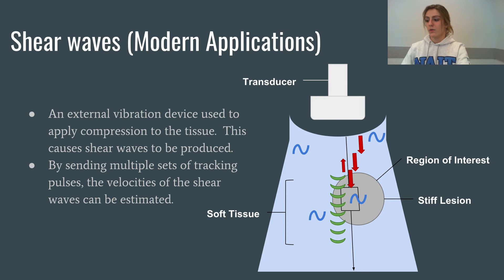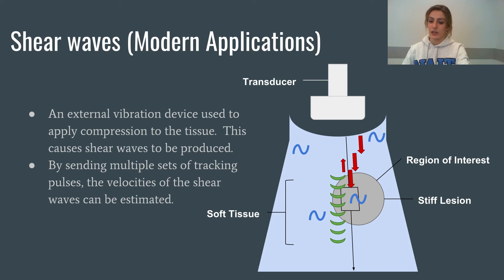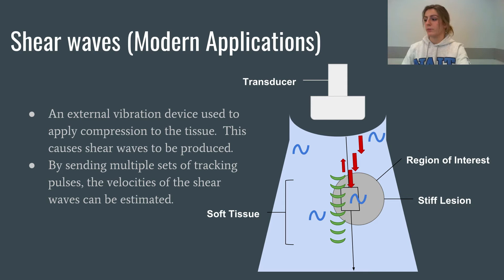When we use shear elastography today, we use an external vibration device and shear waves to apply compression to the tissue, which causes shear waves to be produced. Shear waves travel perpendicular to the compressional wave and are much slower than the compressional waves — this is what makes it possible to track them. To track them, we look for small displacements of the tissue in the lateral dimension. The push pulses, or compressional waves in green, create the shear waves shown in blue. These travel perpendicular to the push pulse. The transducer then sends out tracking pulses — the red arrows — which measure the tissue displacement caused by the shear waves. By sending multiple sets of tracking pulses, the velocities of the shear waves can then be estimated.